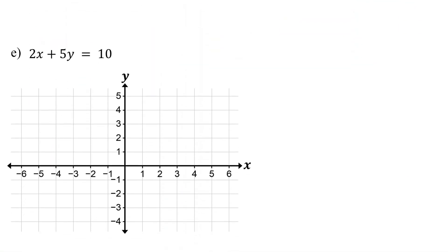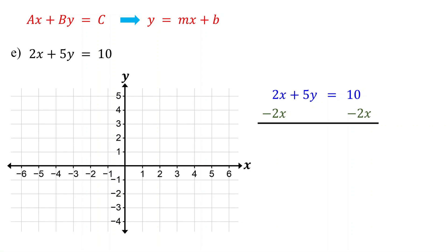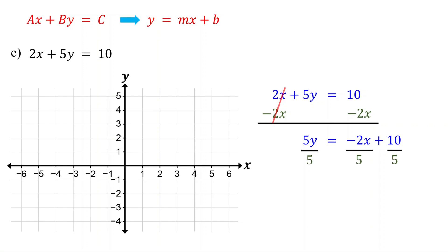Now, what do we do if the equation is in standard form? In this case, first convert the standard form to slope-intercept form by isolating y on one side. Start by subtracting the x-term from both sides. On the left side these cancel out, leaving 5y. On the right side, we get negative 2x plus 10. Write the x-term first, then the constant term, to match the slope-intercept form. Then divide both sides by 5 to isolate y. Remember to divide every term. These cancel out, leaving y by itself. 10 divided by 5 is 2. Now our equation is in slope-intercept form, so you just need to follow the same steps as in the previous examples.